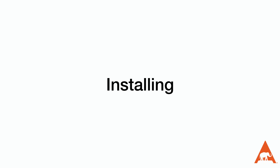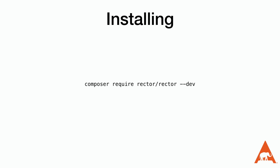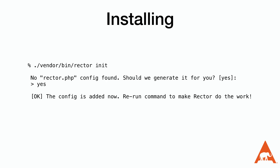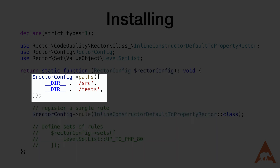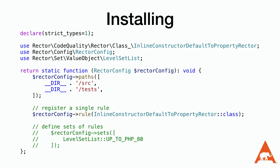Installing Rector is done using the standard composer require command that we've gotten used to. We'll add it to the require-dev section as we won't be running it on production. We need to initialize Rector using its init command. This command generates a file named rector.php in our current directory. This file creates a function that we will use to configure Rector for our project. The first portion sets the paths that we are going to have Rector check — our project only has a source and a test directory, but notice that it's not running on the vendor directory as we're not the ones maintaining that code.